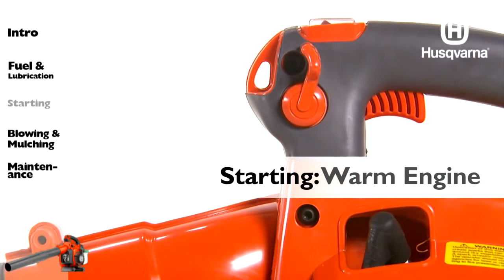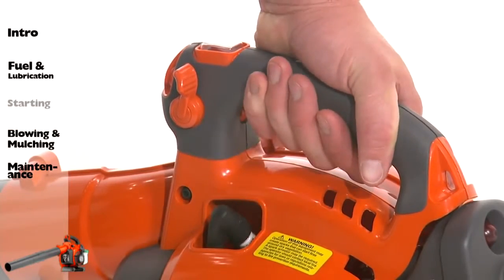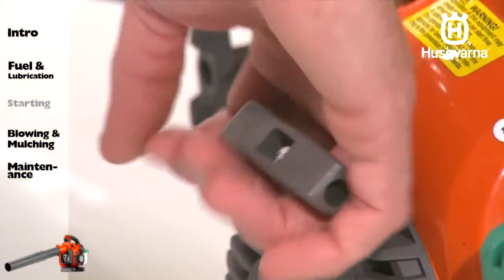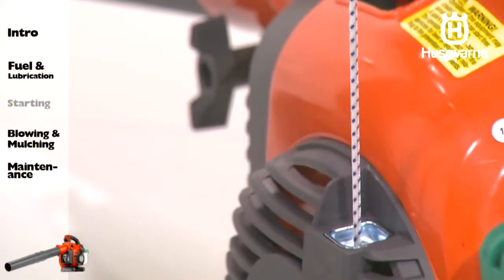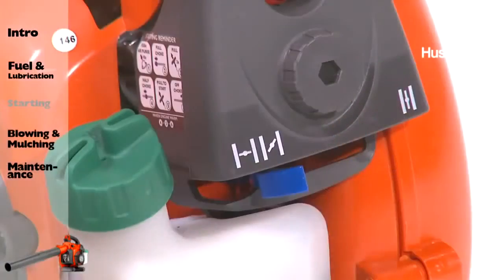To start a blower with a warm engine, squeeze and hold the throttle trigger. Move the choke to the half position. Pull the starter rope sharply while squeezing throttle trigger until the engine runs. Move the choke to the off-choke position.